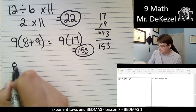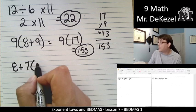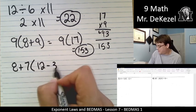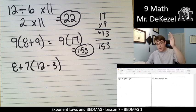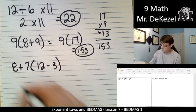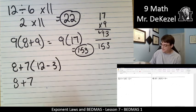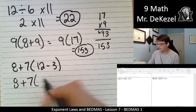We have next 8 plus 7 times 12 minus 3. So we go down our hierarchy. Do we have any brackets? Yes, we do. Let's do those. 8 plus 7 is 15. And then 12 minus 3 is 9.